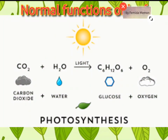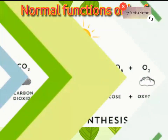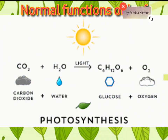Normal functions of the leaf. Number one: photosynthesis. Leaves contain chlorophyll that traps solar energy from sunlight and helps in the formation of glucose from water and carbon dioxide. This process is called photosynthesis, and the equation is shown on the screen.